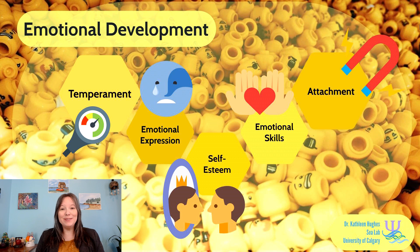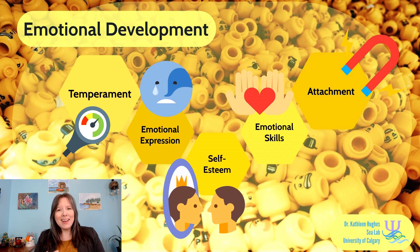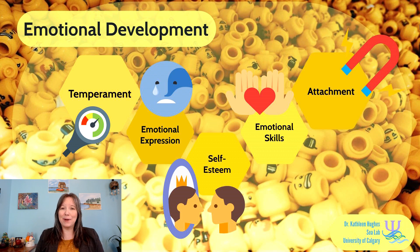Welcome to developmental psychology unit 4 on emotional development. Emotional development starts off with a really strong biological basis, more so than even cognitive or social development. We're going to start off talking about the biological underpinnings of emotional development, and then you'll see how emotions, cognitions, and social skills blend together as we develop, reinforcing how physical, emotional, cognitive, and social development truly can't be separated, even though we're artificially separating them for this course.